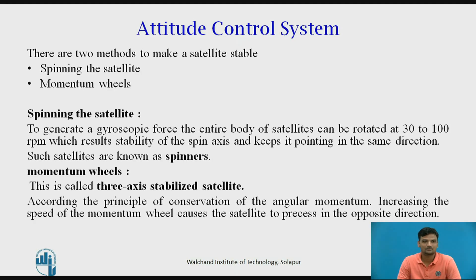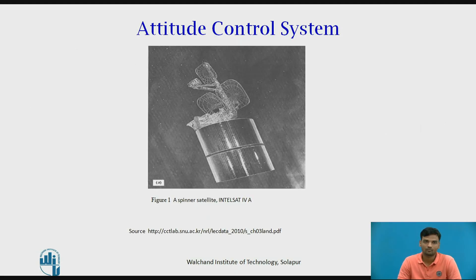Alternatively, a satellite can be stabilized by one or more momentum wheels. This is called a 3-axis stabilized satellite, of which the Hughes 701 series is an example. The momentum wheel is usually a solid metal disk driven by an electrical motor. Increasing the speed of the momentum wheel causes the satellite to rotate in the opposite direction according to the principle of conservation of angular momentum. As shown in the figure, the spinner consists of a cylindrical drum covered with solar cells containing the power systems and rocket motors. The communication system is mounted at the top and driven by an electric motor in the opposite direction to the satellite body's rotation to keep the antennas pointing towards the earth. Such systems are called DESPAN.